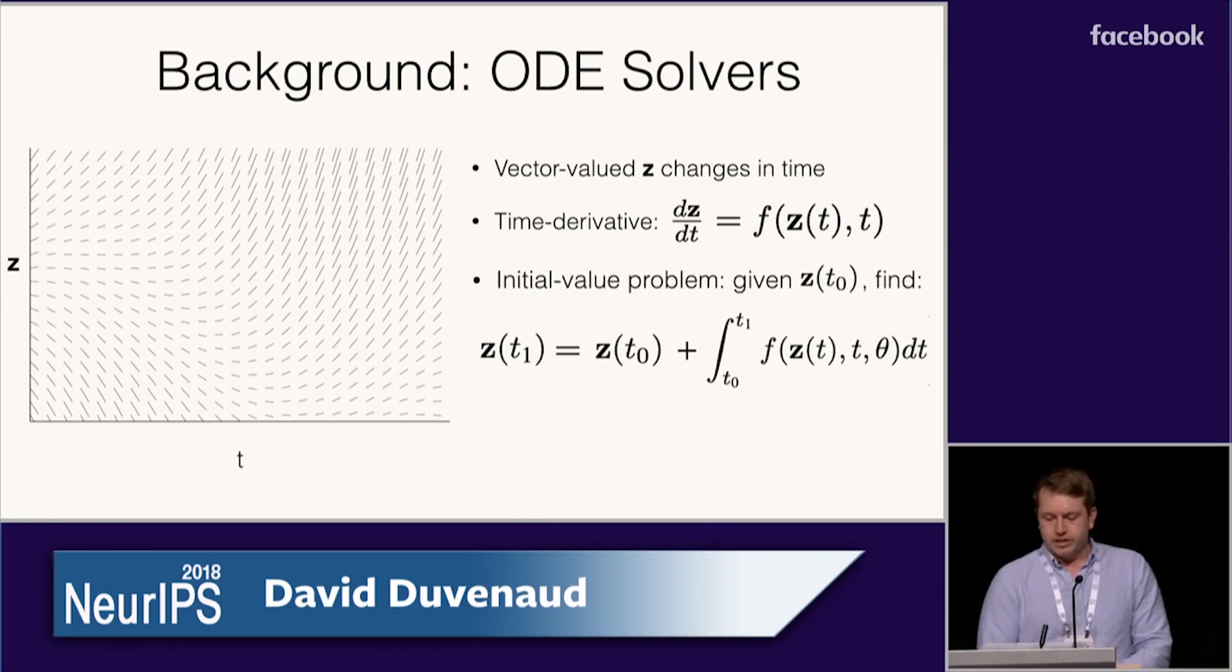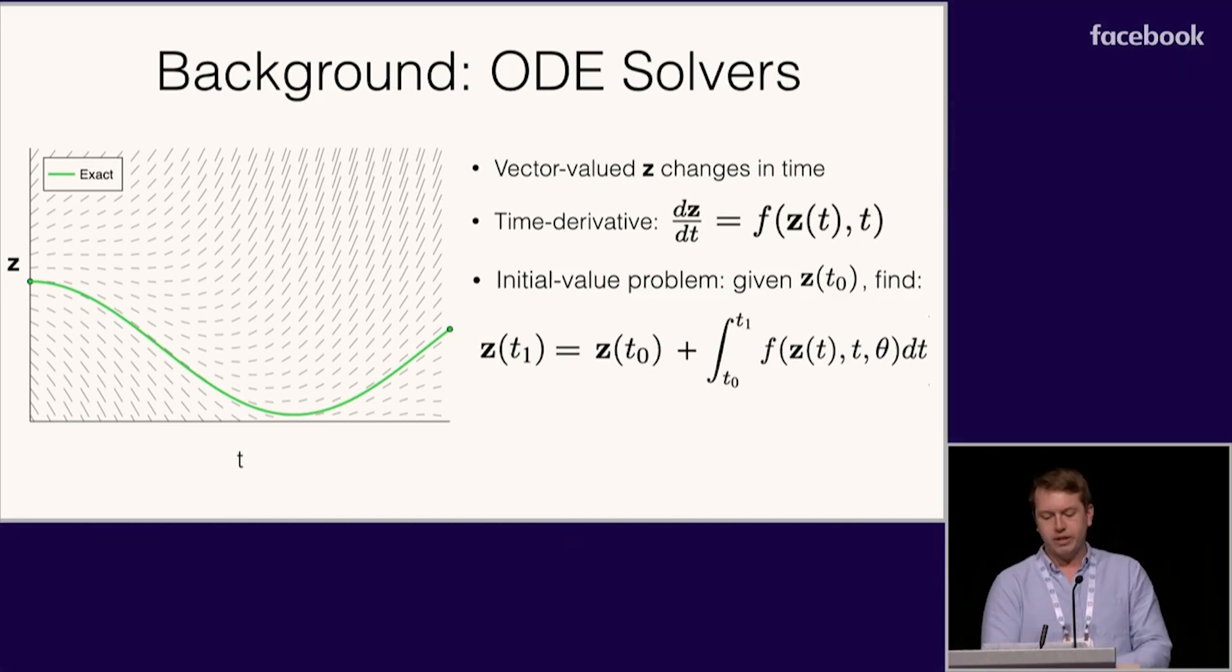What we usually do with ODEs is solve initial value problems. What this means is that you're given the state at some time t0, and you need to compute the future state at some time t1. Evaluating this state exactly requires integrating the derivative of the state through time, and usually has to be done approximately with a numerical solver.